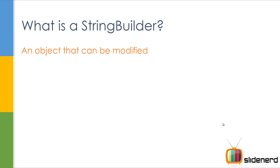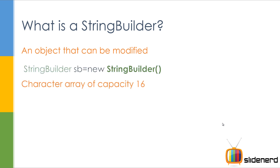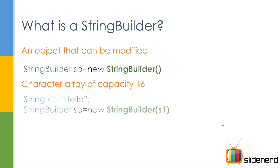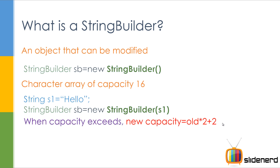Now let's talk about String Builder. String Builder is again a piece of text or string that can be modified — it's the same as String Buffer. StringBuffer sb = new StringBuilder(), same thing. Character array of size 16, same thing. String s1 = "hello"; StringBuilder sb = new StringBuilder(s1) — the same thing you saw in the last slide. Capacity exceeds: new capacity is old capacity into 2 plus 2, the same thing.